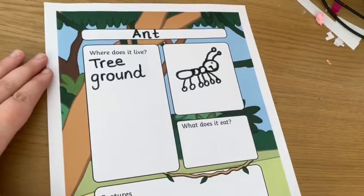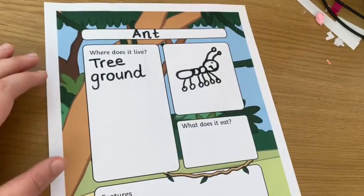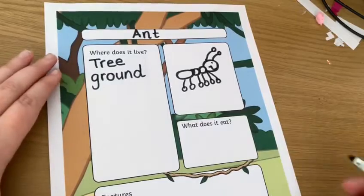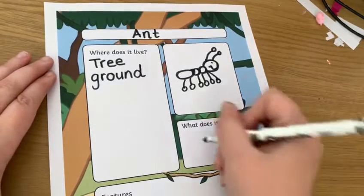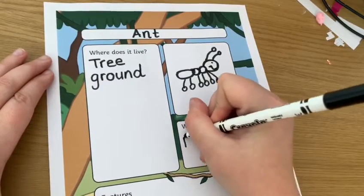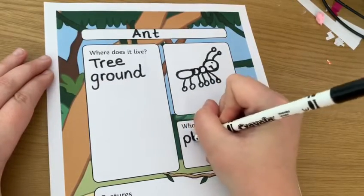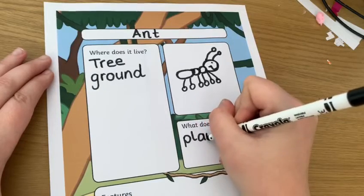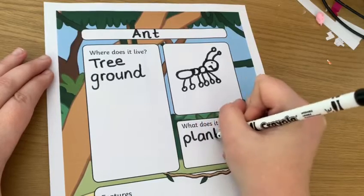What does it eat? Ants like to eat plants.